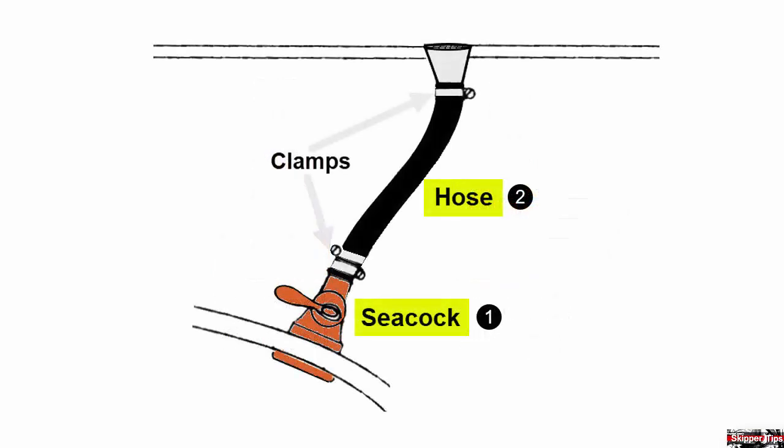The second part of your seacock system consists of the hose which runs from the seacock to the fitting. Check the hose for wear or abrasion and tears or cracks anywhere along the hose. Also feel the hose for soft spots. Replace the hose if you find any of these problems.